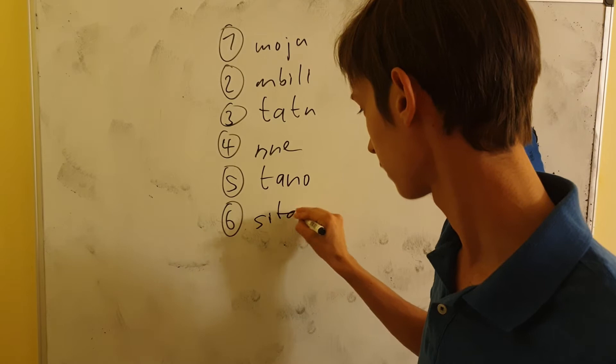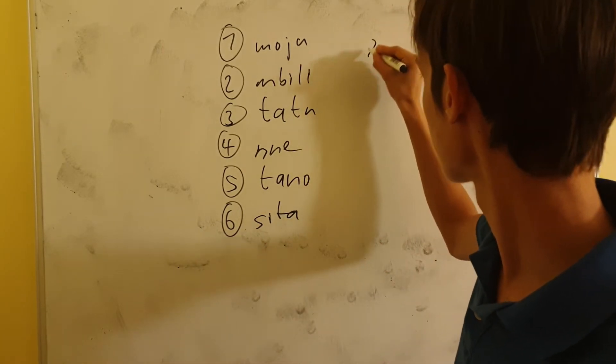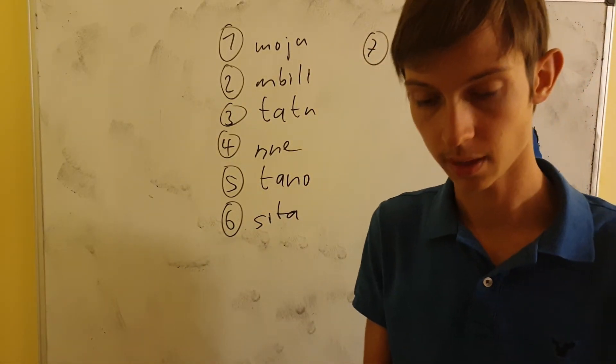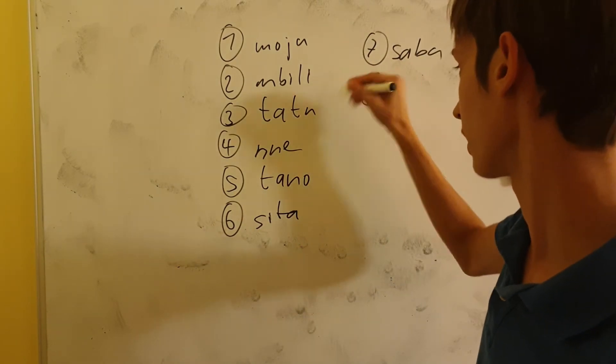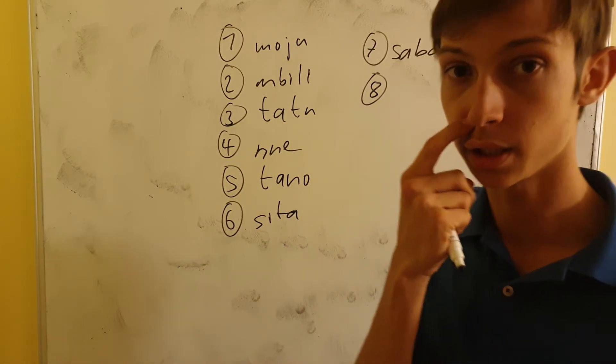Number 7. Saba. These start to be quite normal, right? Or they're all normal, but these are quite easier to pronounce.